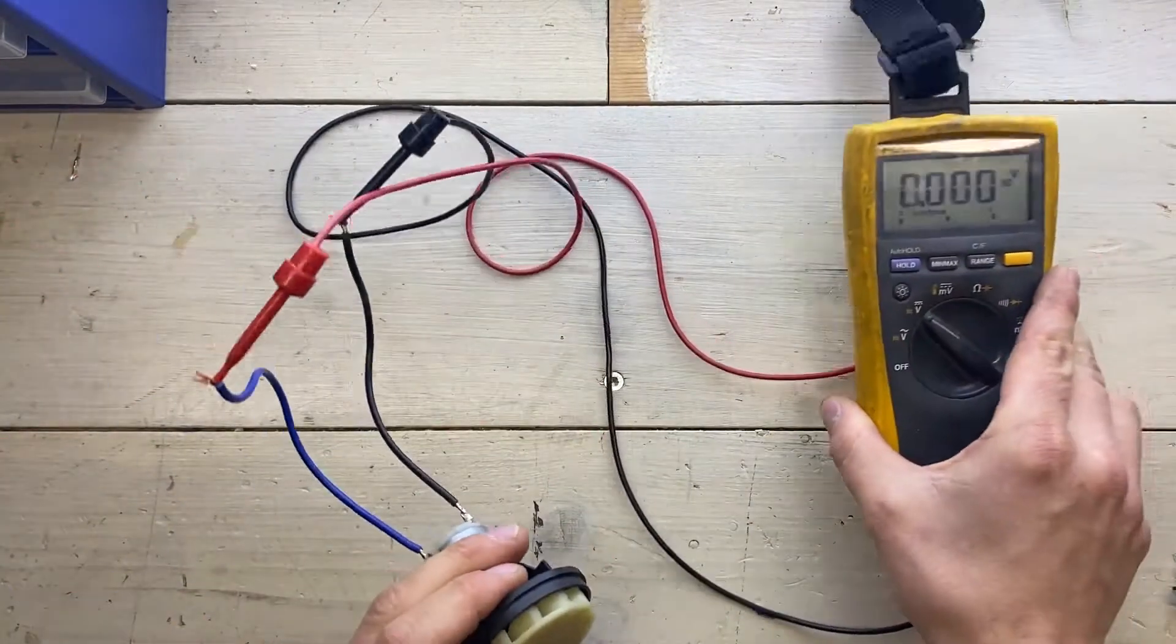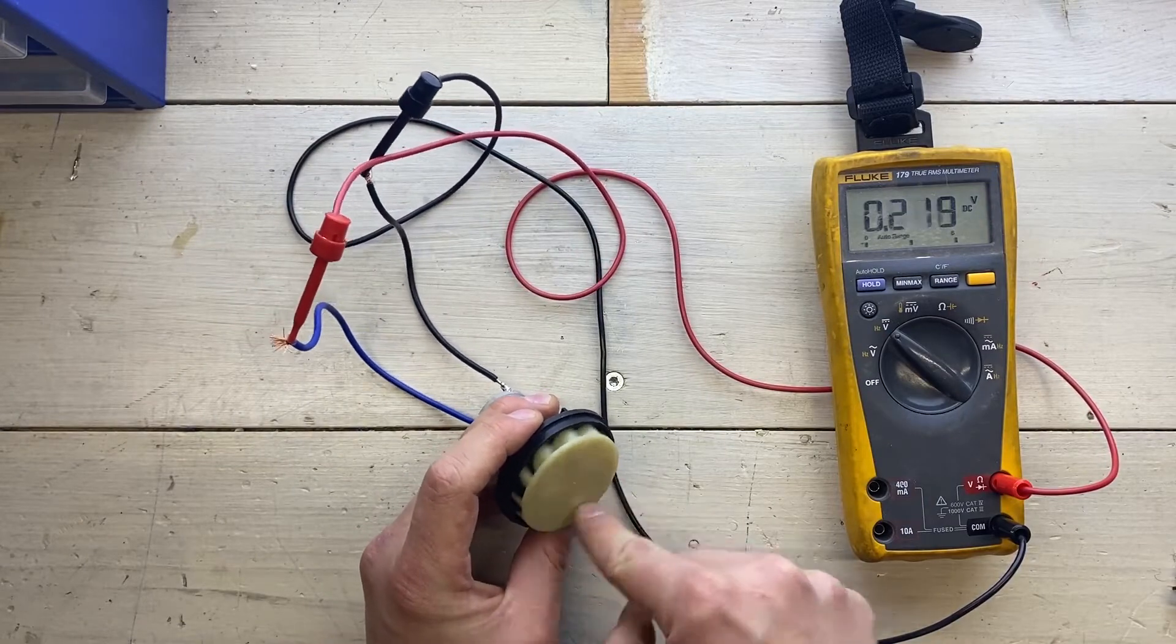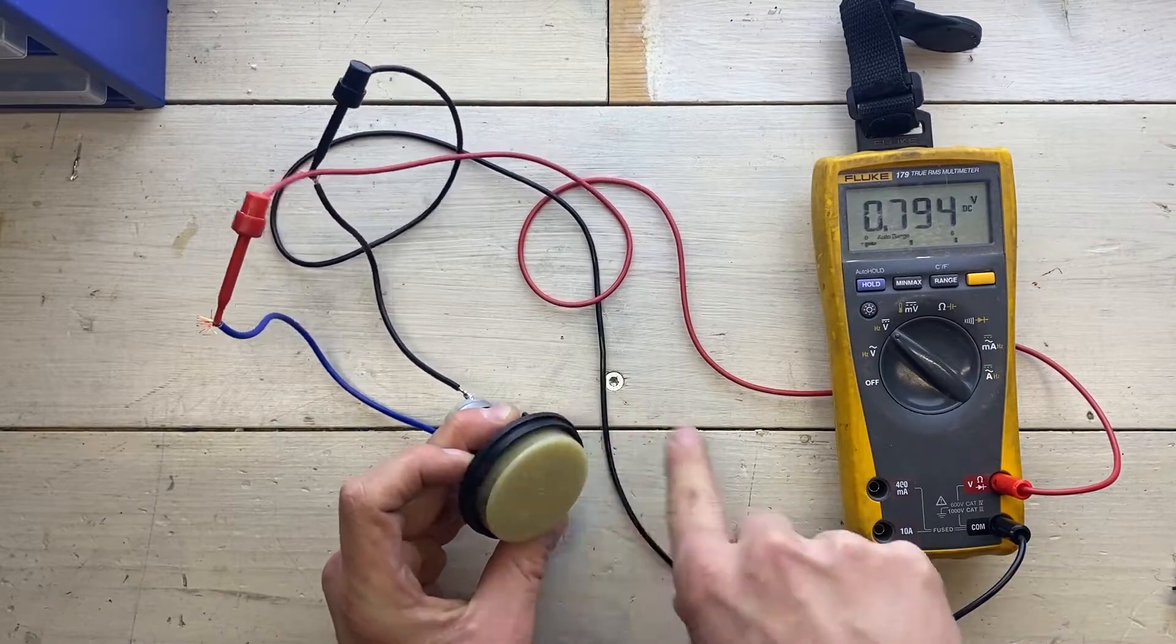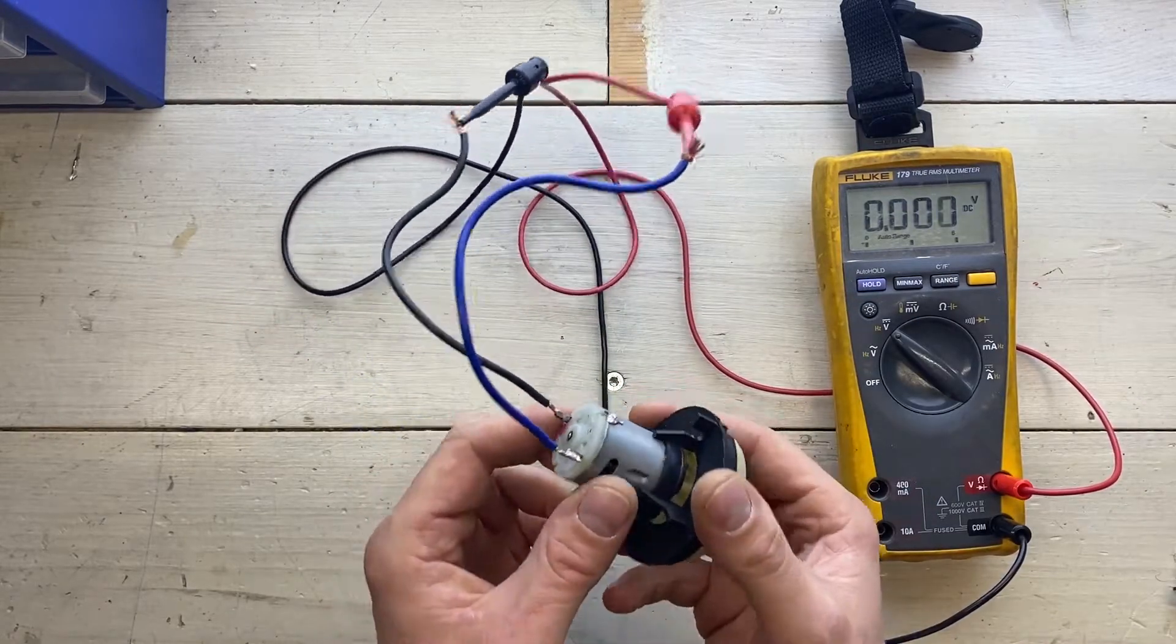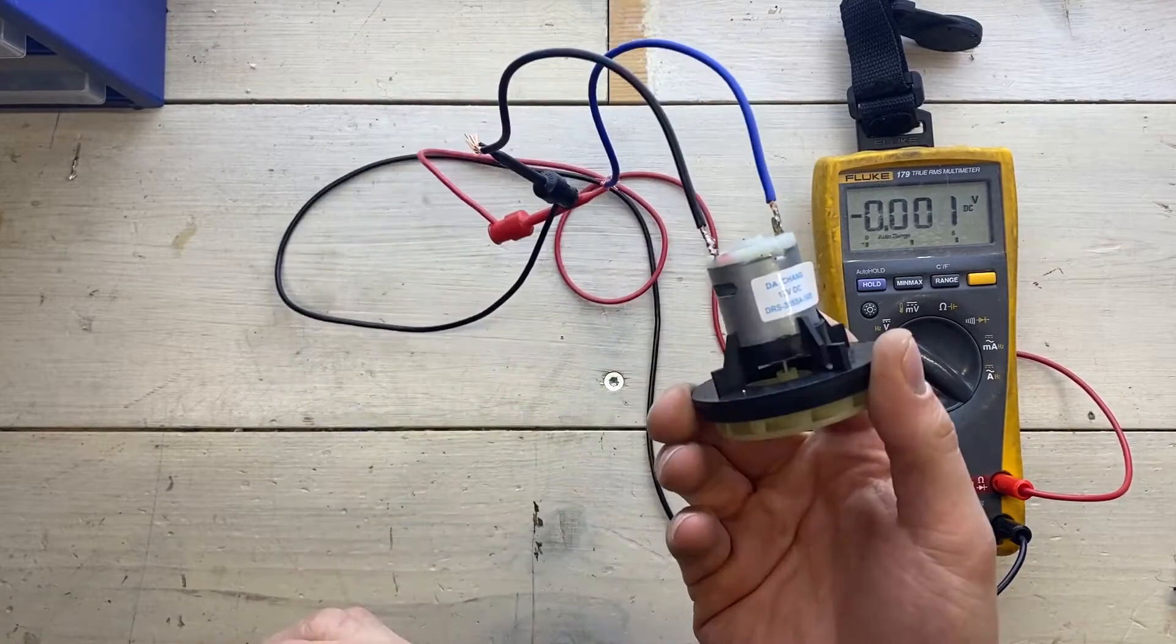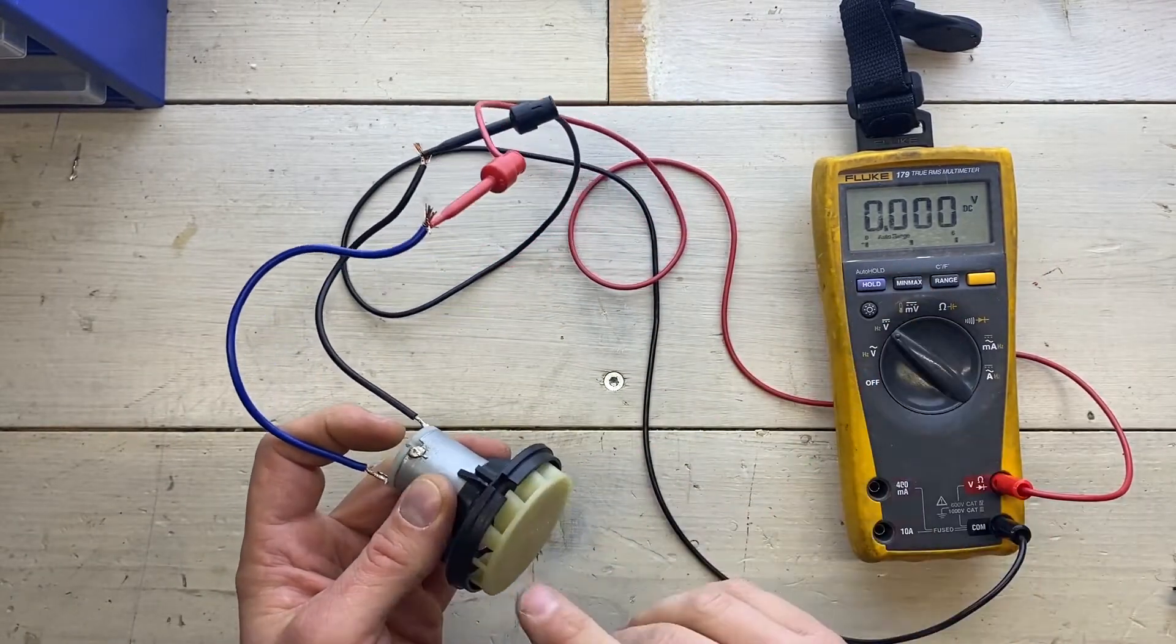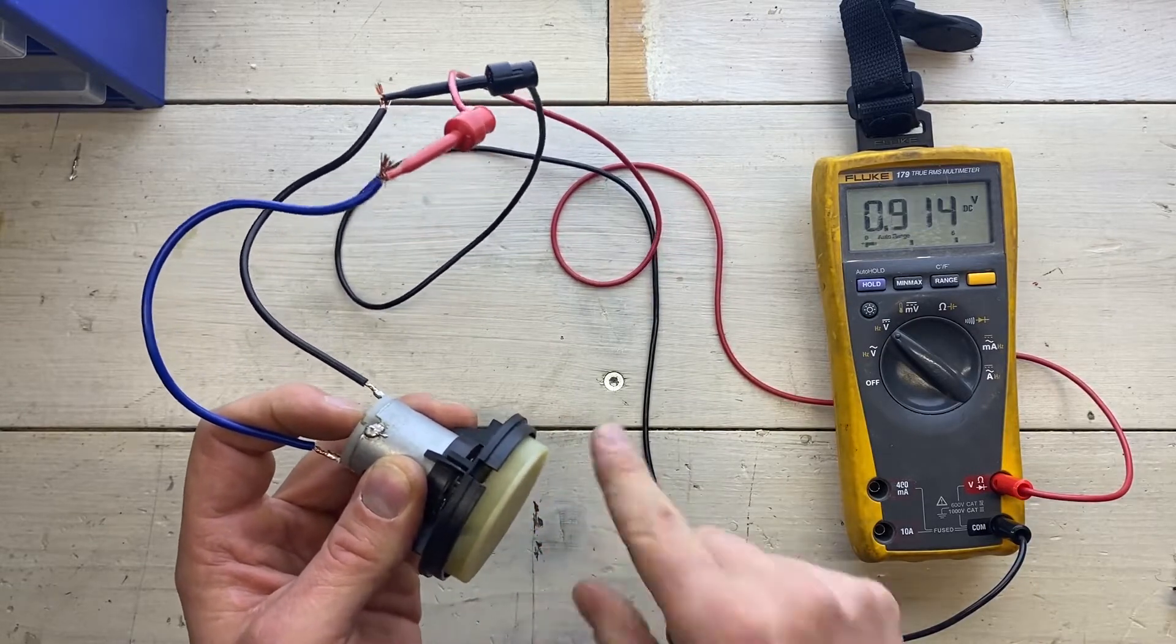And the reverse is of course true as well. So if we turn the motor input shaft we create a small voltage on the wires. And this is of course the entire premise of a generator. And for a DC motor or generator like this the output voltage is of course proportional to the speed of the shaft.